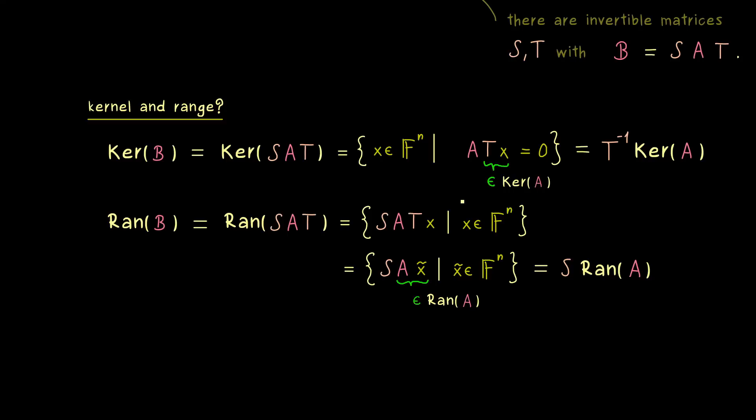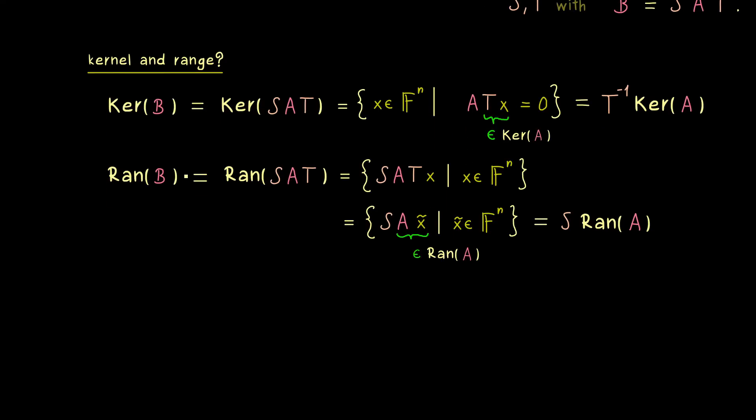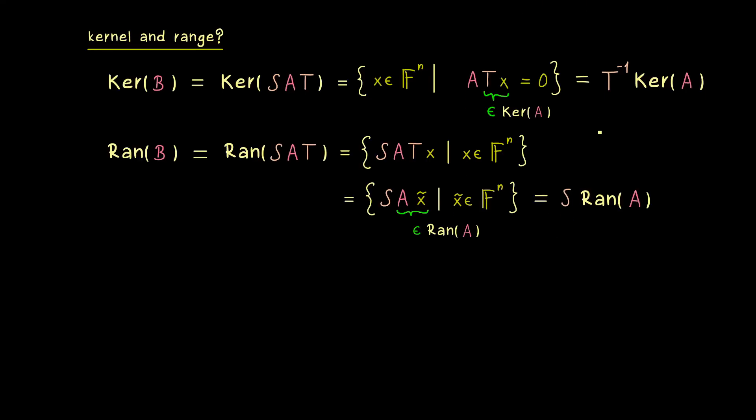So in summary, we get that the kernel and the range are not invariants under the equivalence transformation. However, now we found out that the dimensions of the two things are invariant. Simply because the invertible matrix here on the left will not change the dimension of the space.